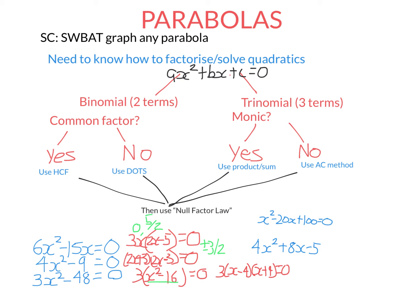So if x minus 4 equals zero, x equals positive 4. If x plus 4 equals zero, x equals negative 4. The two solutions are plus and minus 4. Now let's look at trinomials. Here's a monic trinomial because the coefficient of x-squared is 1, so we use the product sum method.